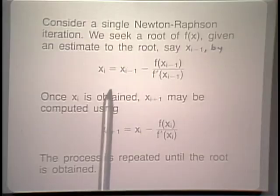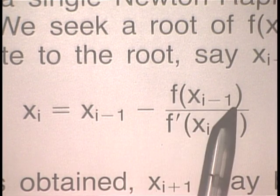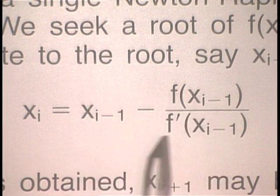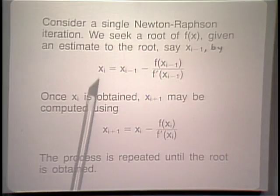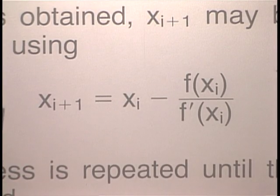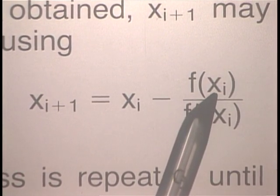Let us now consider a single Newton-Raphson iteration. Basically, what you're doing is: given x_{i-1}, you calculate f at x_{i-1}, divide this value by f' at x_{i-1}, and then this right-hand side gives you a better approximation to the root of the equation. Once you have x_i, you repeat the process and get x_{i+1}. You keep on repeating until f(x_i) is close to 0, because then you have a root.